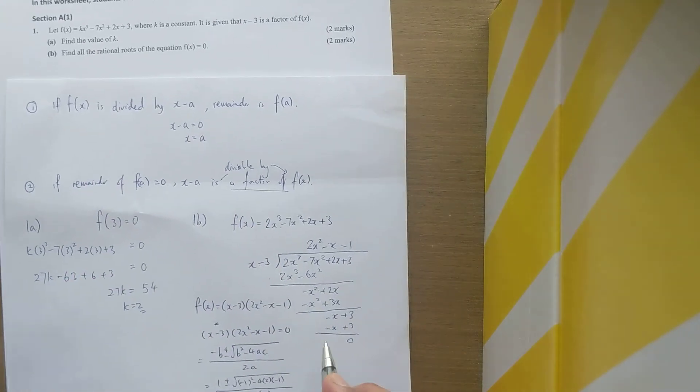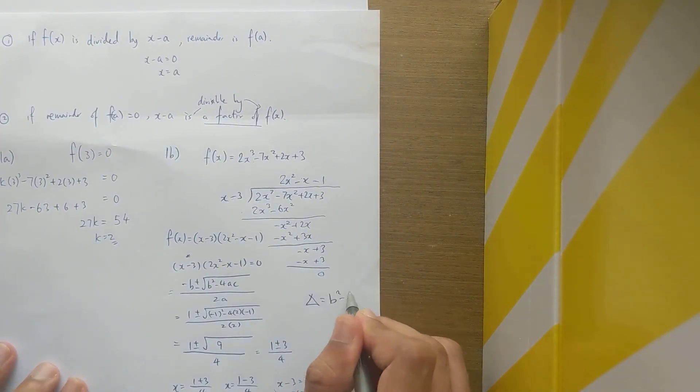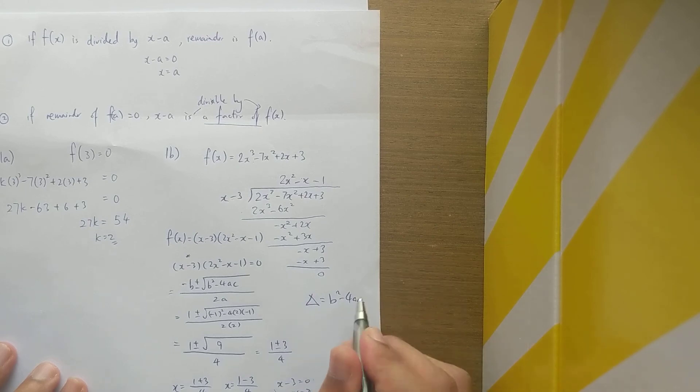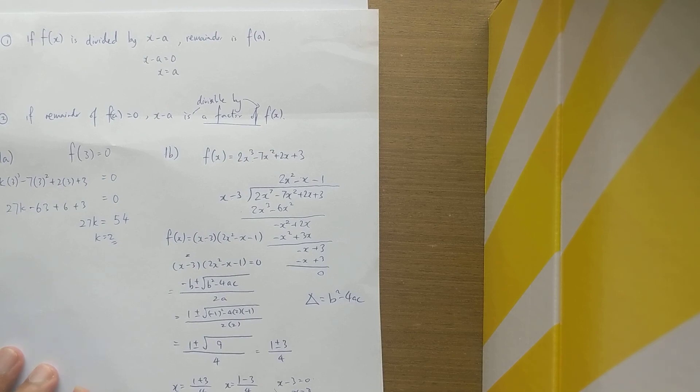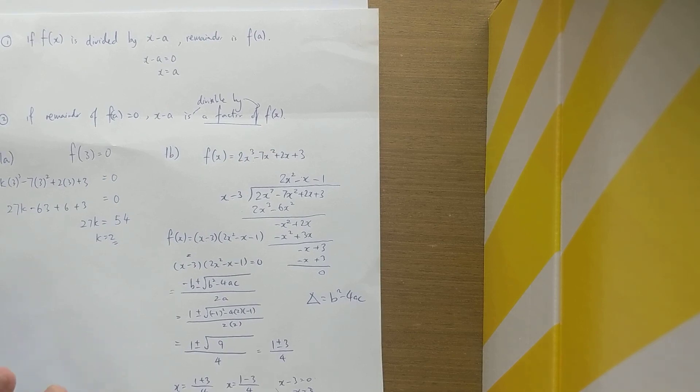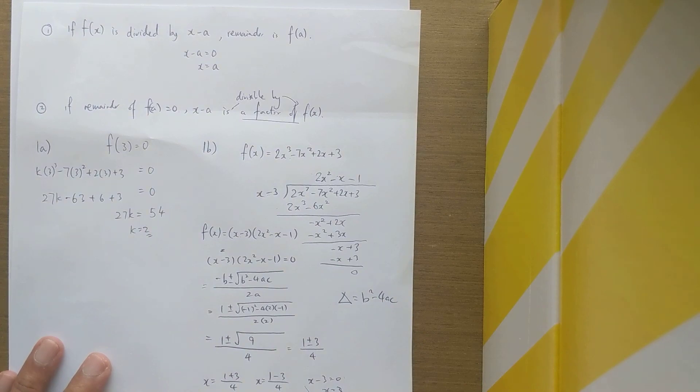Sometimes they'll also ask for real roots or not. For real roots, we simply just use the discriminant b squared minus 4ac. If it's bigger than zero, we have two roots. If it's less than zero, we have no roots—no real roots, by the way. When it's equal to zero, it has one repeating root. That's all we need to remember. Hopefully you can get good grades. Good luck.